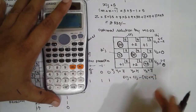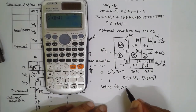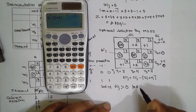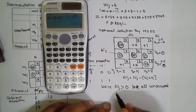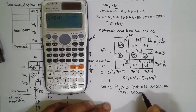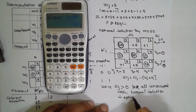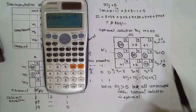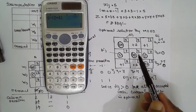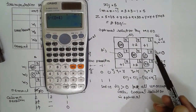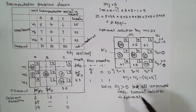Since all DIG values are greater than 0 for all unoccupied cells, the current solution is optimal. Everything is positive, so the system is optimal. If any negative value had appeared, one more procedure would be needed, which will be taught in the next video. I am Santosh Gaidankar. Thank you very much.